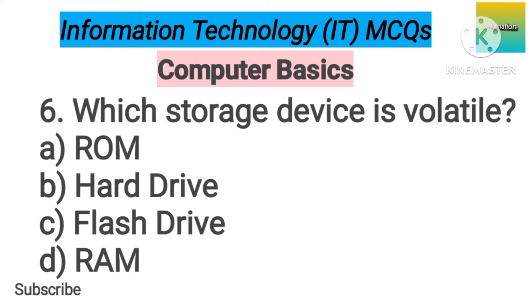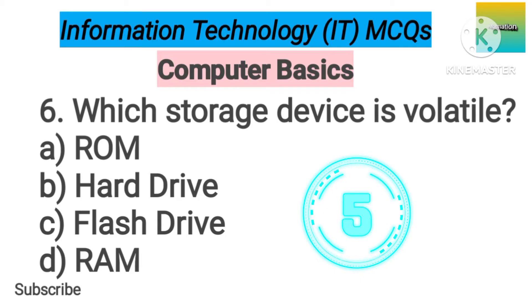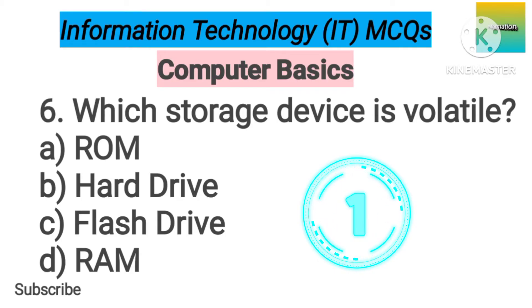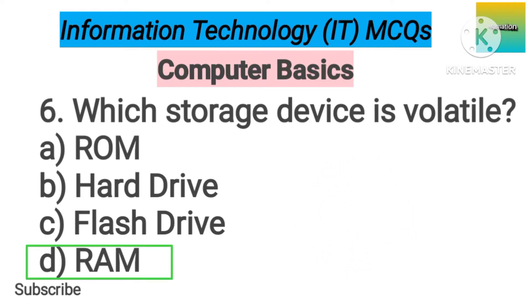Number 6. Which storage device is volatile? A: ROM. B: Hard Drive. C: Flash Drive. D: RAM. The correct answer is option D, RAM.